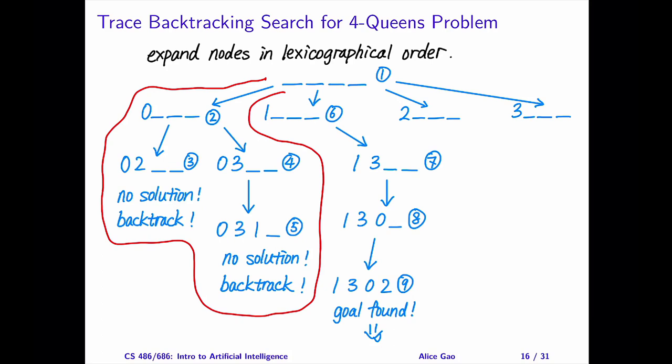In the previous video, I solved the four queens problem using backtracking search. In the leftmost subtree, we started by putting the first queen in row 0. Later on, we realized that this assignment does not lead to a solution. It turns out that if we make use of arc consistency, we can detect this dead end without expanding the leftmost subtree at all.